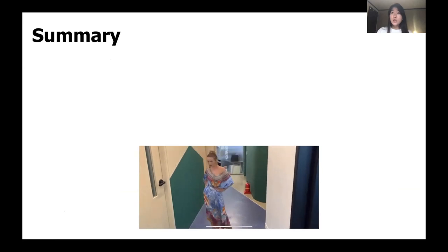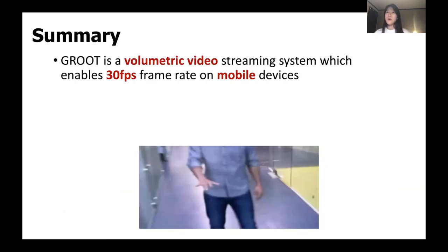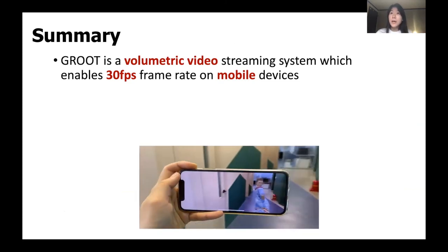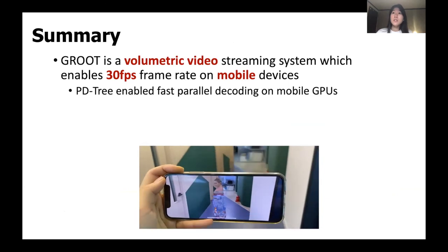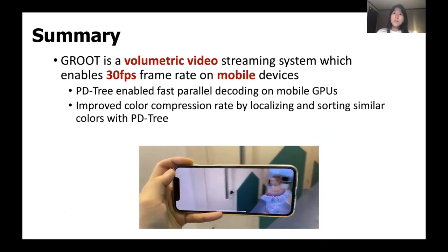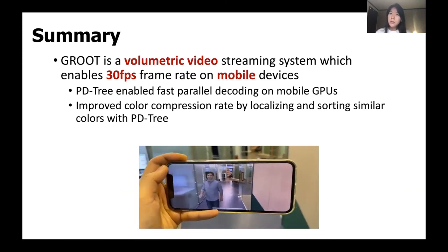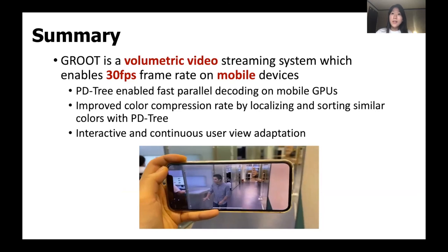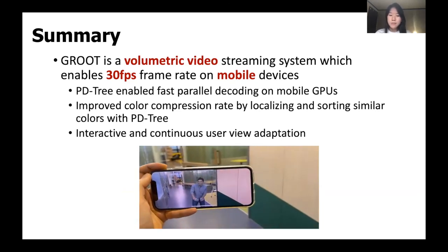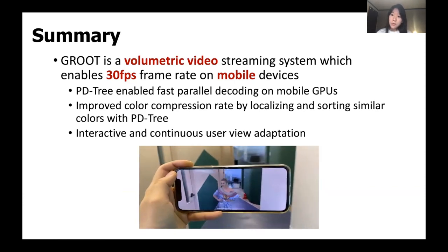So in summary, GROOT is a volumetric video streaming system which enables 30 fps frame rate on mobile devices. We achieved this by PD tree enabled fast parallel decoding on mobile GPUs, an improved color compression rate by localizing and sorting similar colors with PD tree, and applying interactive and continuous user view adaptation. Thank you for listening, and I'm happy to take any questions.